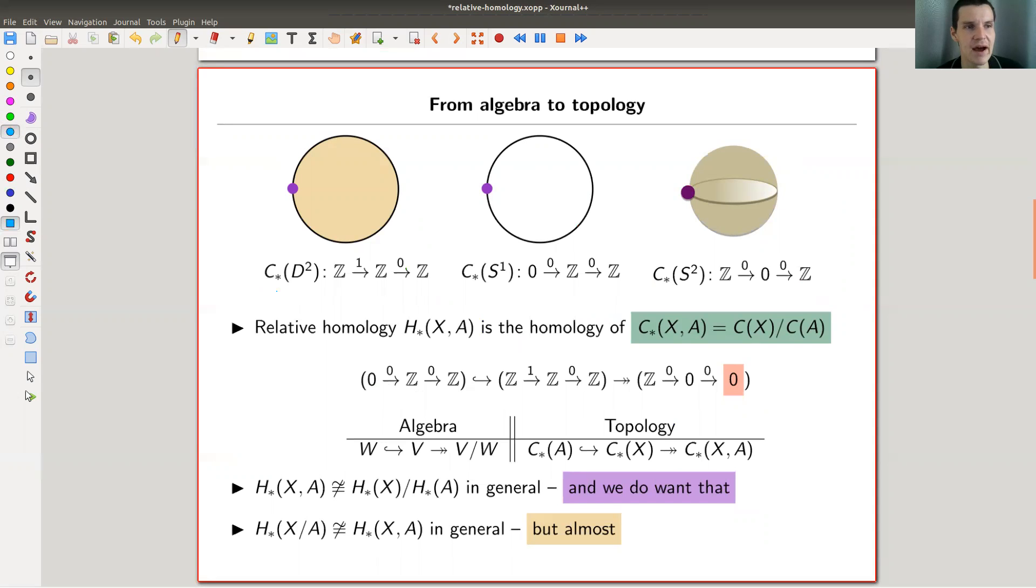So what I want to do is I want to look at the corresponding chain complexes for all those three. So here's my x, here's my a, and here's my x mod a. And I look at the corresponding chain complexes. Let's say we do it in cellular homology. In cellular homology, I would just count. So I have one zero cell and I have one zero cell everywhere. I have a one cell, I have a one cell, I don't have any one cells here. And I have a two cell. So that's how this looks like and the corresponding attaching maps. So those are the three complexes.